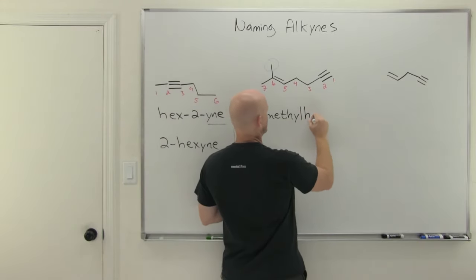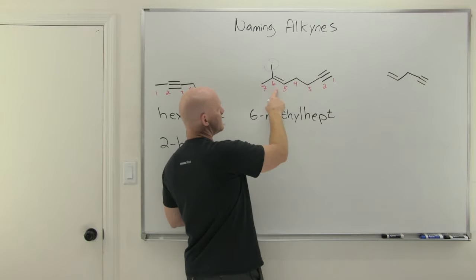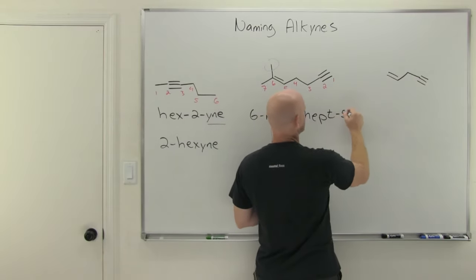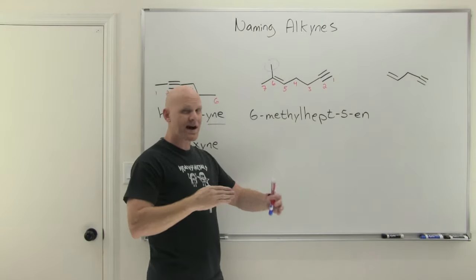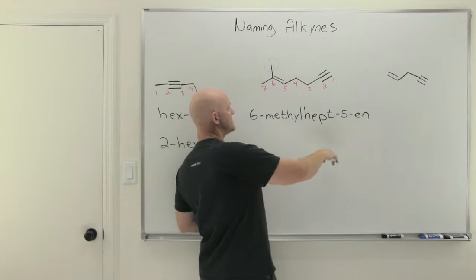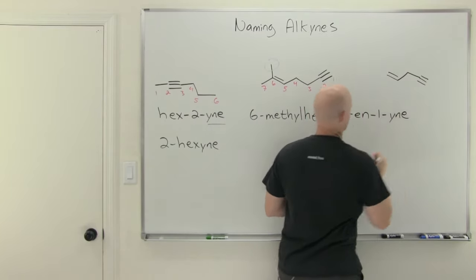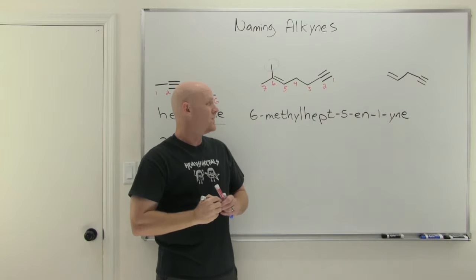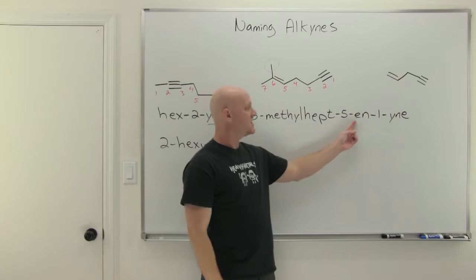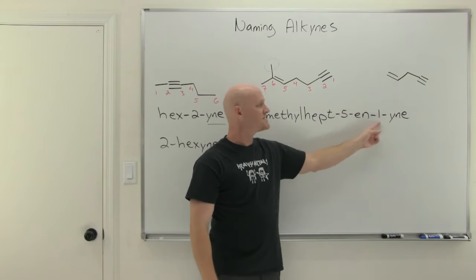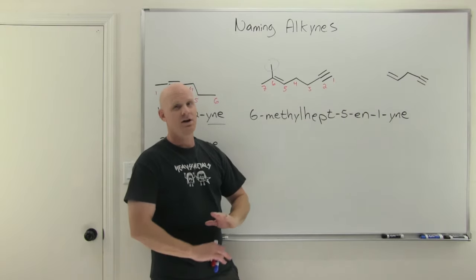Because both the -en and -yne appear in the parent name, the numbers must go in the middle. So 6-methyl, then hept for seven carbons. Ene comes before yne alphabetically, and it's at position five, so hept-5-ene. We drop the E before saying yne to avoid vowel-vowel combinations, giving hept-5-en-1-yne. The complete name is 6-methylhept-5-en-1-yne. Again, because two major functional groups appear in the parent chain, numbers must go in the middle.